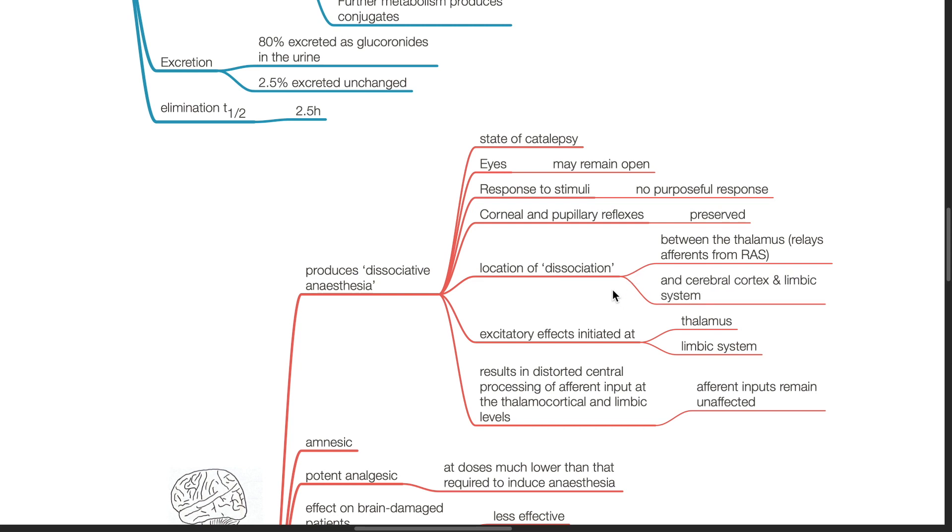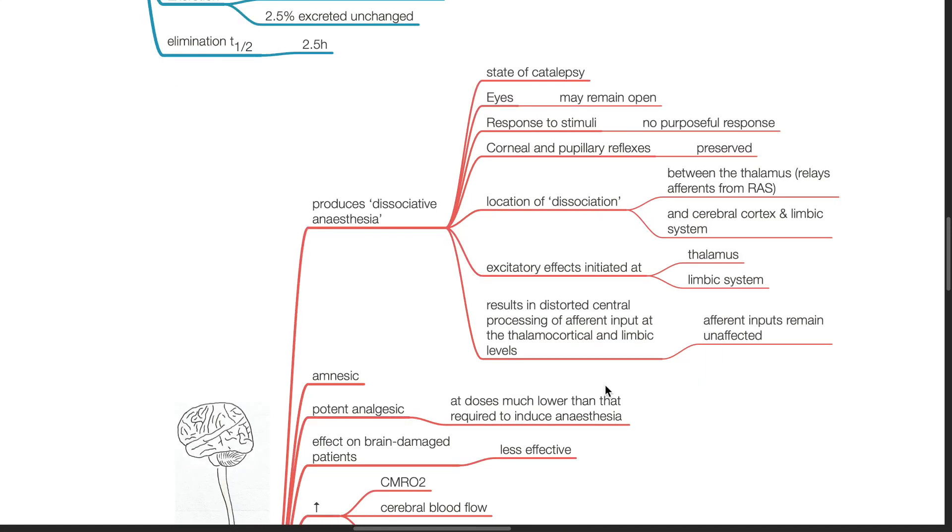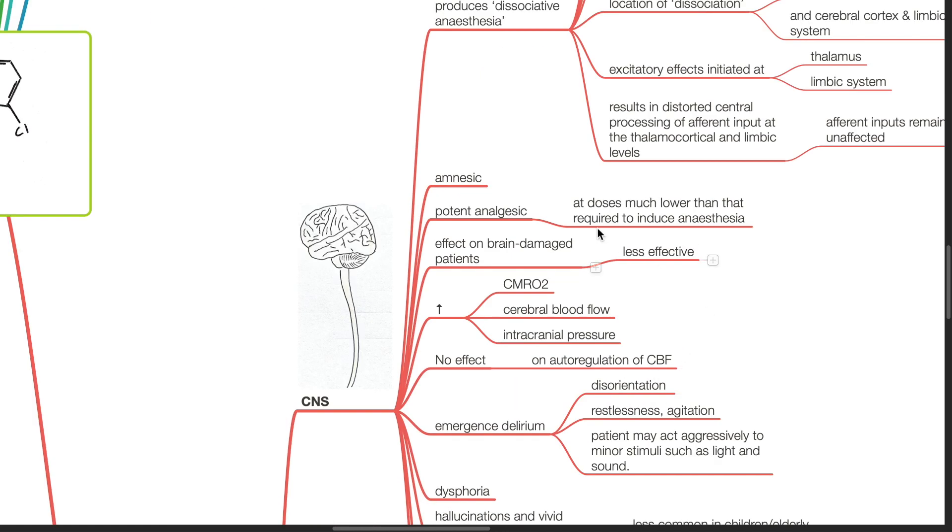The location of the dissociation is between the thalamus which relays afferents from the RAS and the cerebral cortex and limbic system. Excitatory effects are initiated at the thalamus and limbic system. This results in distorted central processing of afferent input at the thalamocortical and limbic levels. Afferent inputs remain unaffected. Ketamine also has amnesic actions.